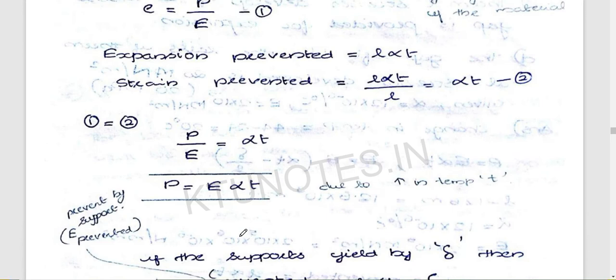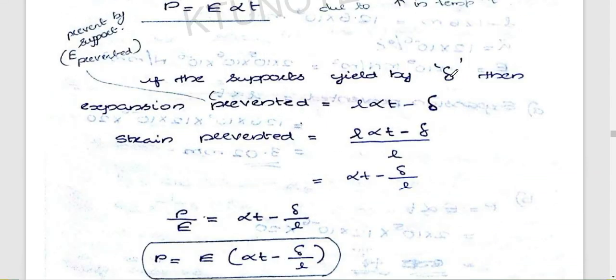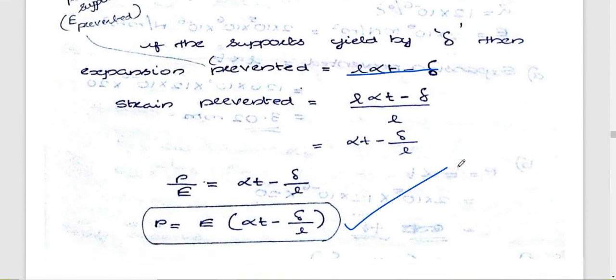When temperature and length increase, if the bar is rigidly supported and not allowed to move, stress is induced. If the support yields by delta, the actual total delta L is alpha T minus delta. Strain is then (alpha T minus delta L) divided by L. Stress equals E into (alpha T minus delta L over L). This is the main equation for temperature stresses when there is support yield.